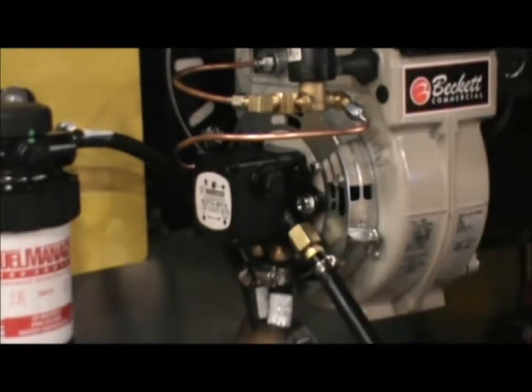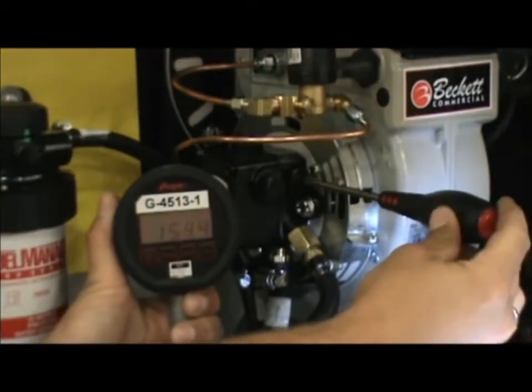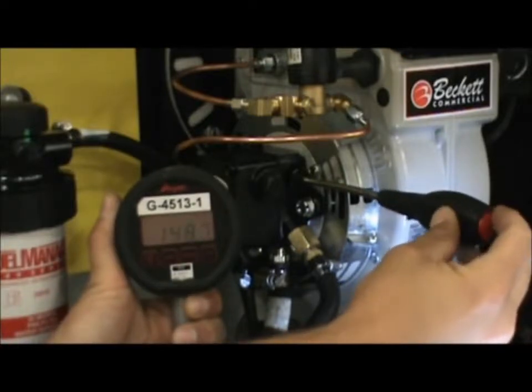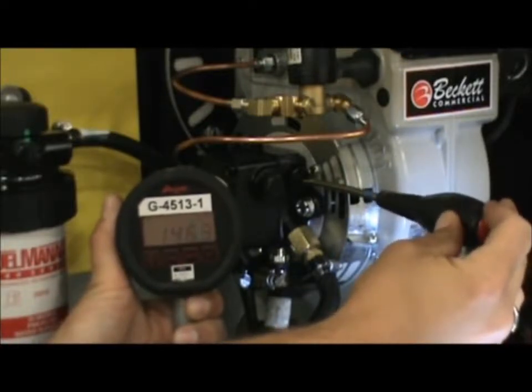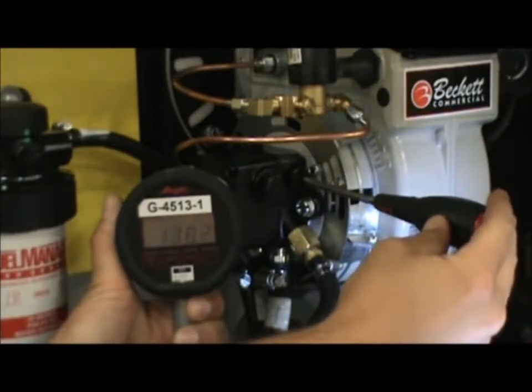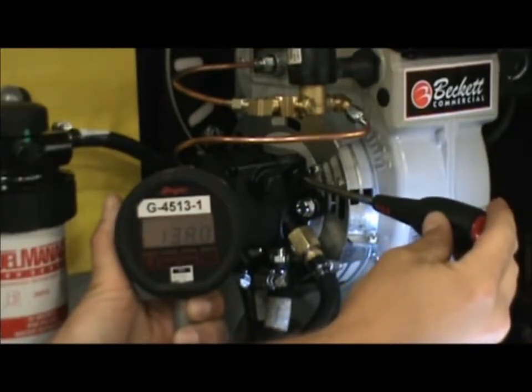Start the burner. To reduce the fuel pressure, turn the adjustment screw counterclockwise to the desired set point. To increase, turn clockwise. Never set the fuel pressure higher than the specifications listed in the Operator's Manual.